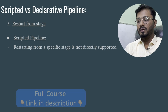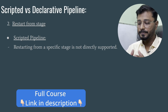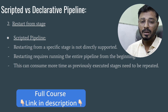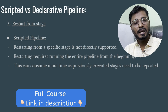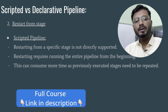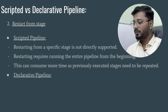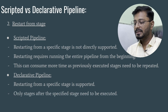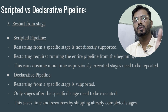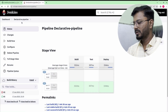The second difference is restart from stage. In a scripted pipeline, restarting from a specific stage is not directly supported — you must re-run the whole pipeline from the beginning. If there are 10 steps and step 9 fails, you still have to start over from step 1, wasting build time. In a declarative pipeline, restarting from a specific stage is supported — only stages after the specified stage need to execute, saving significant time.